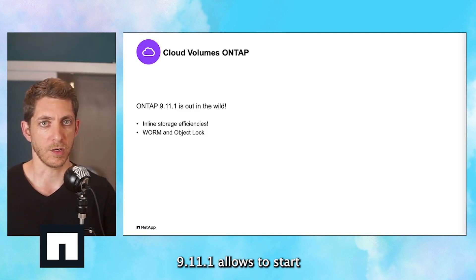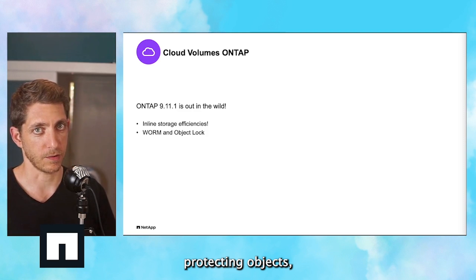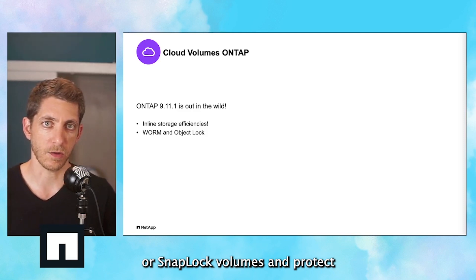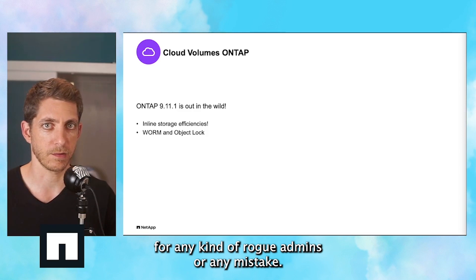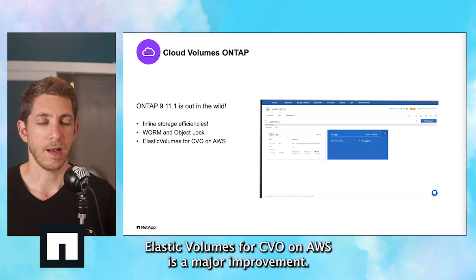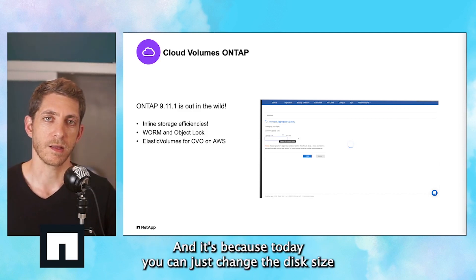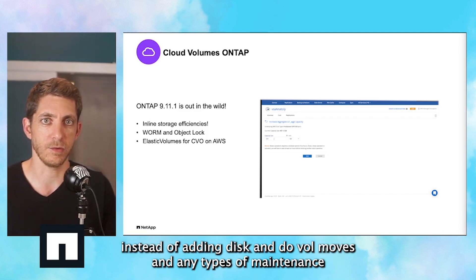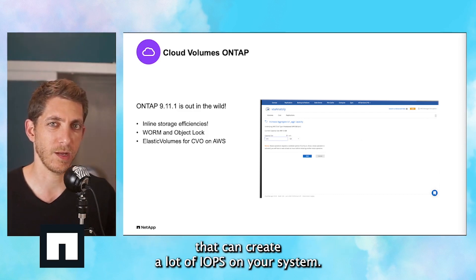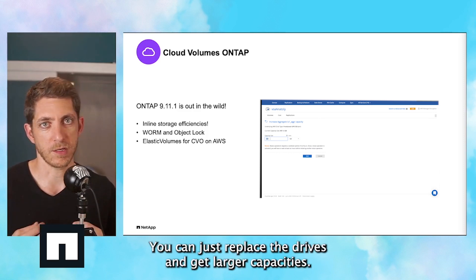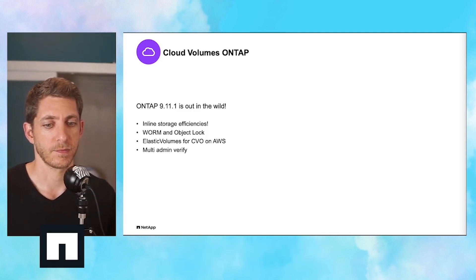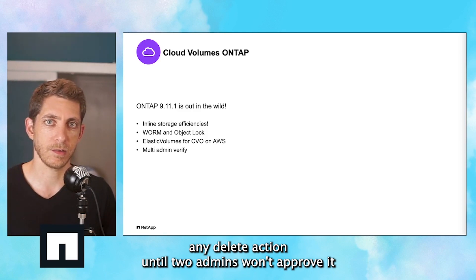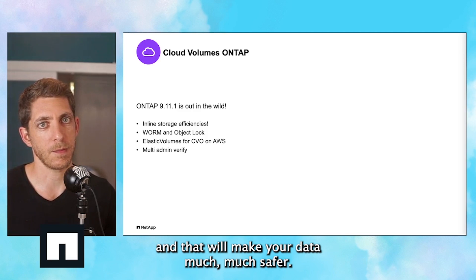9.11.1 allows us also to start protecting objects. So if you're using Cloud Backup for protecting to StorageGrid or to AWS, you can now lock the object and protect from any kind of rogue admins or any mistake. Elastic Volumes for CVO on AWS is a major improvement, because today you can just change the disk size instead of adding disks and doing vol moves and maintenance that can create a lot of IOPS on your system.